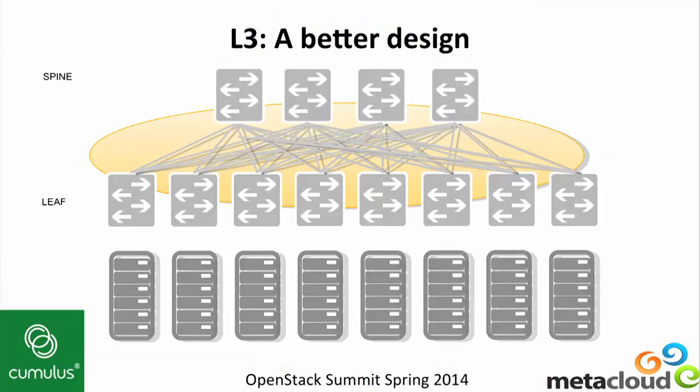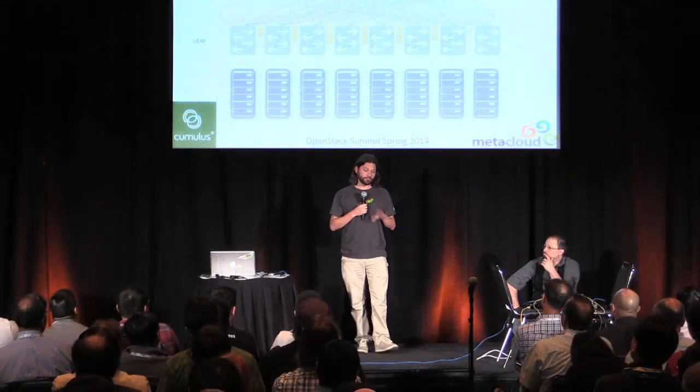Here I have a graphical representation of what we call a leaf-spine architecture — some people call it fat tree. The interesting property it has is that each one of those servers can talk to all the other servers in the other racks at full speed as if they're in the same rack. So there's no difference in locality except for maybe a tiny increase in latency, but from a bandwidth perspective you have full bandwidth.